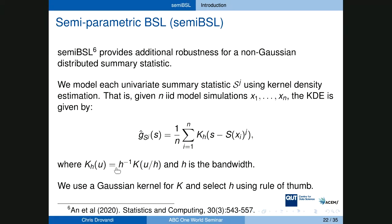That covers the whitening transformation part of the talk — how to reduce the number of model simulations. Now I'll move on to the second part: increasing the flexibility of the BSL approach. Let me stop for any questions about the whitening transformation BSL work.